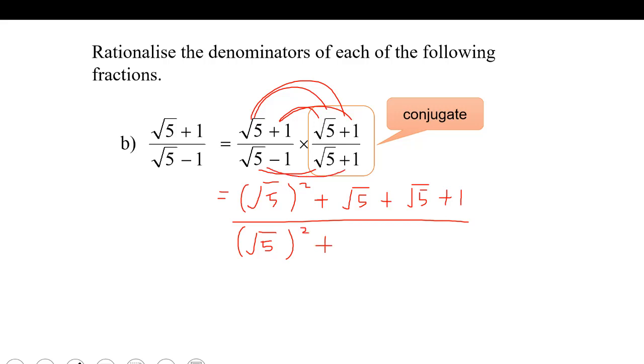And here, and then negative. Then lastly, negative 1 times 1. So if you look at here, we can simplify by cancelling it.